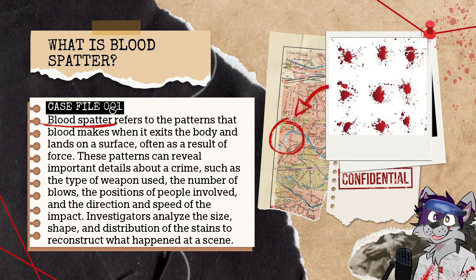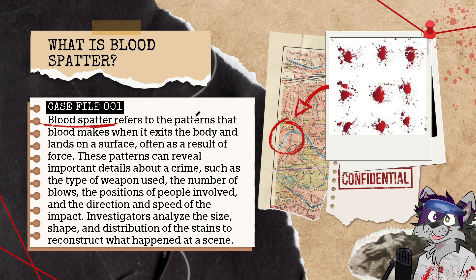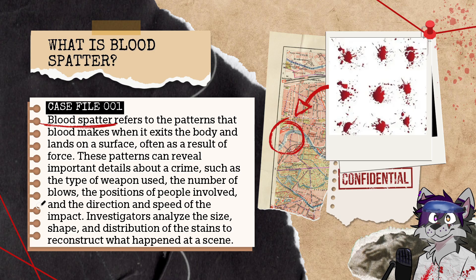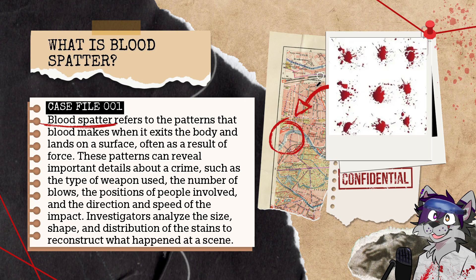Blood spatter refers to the patterns that blood makes when it exits the body and lands on a surface, often as a result of force. These patterns can reveal important details about a crime, such as the type of weapon used, the number of blows, the position of people involved, and the direction and speed of the impact. Investigators use this information to figure out what happened at a crime scene.